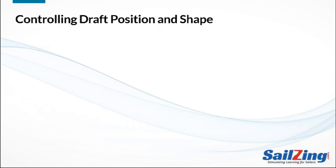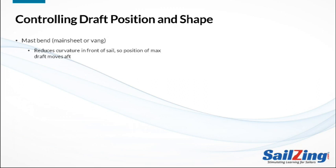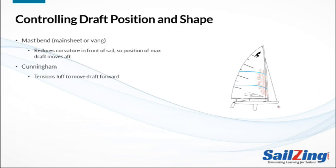Controlling draft position and shape is pretty simple — you only have a few controls to work with. First, bending the mast with the mainsheet or vang moves the draft position aft, simply by pulling out some of the luff curve and making the front of the sail flatter. Second, the Cunningham moves the draft forward by tensioning the luff of the sail. By moving the draft forward, the Cunningham also flattens or opens the leech — in general, moving the draft forward on any sail flattens the leech.